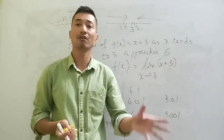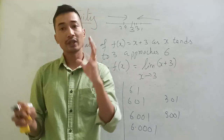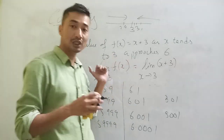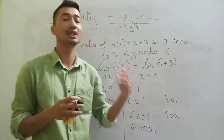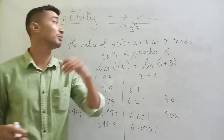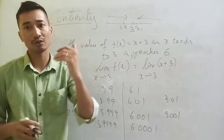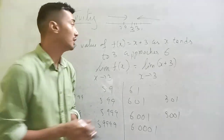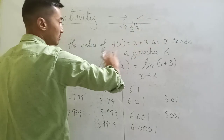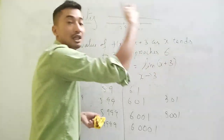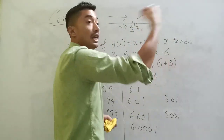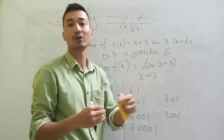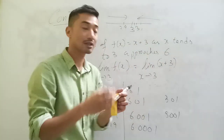I'm going to bring out a new video on limits in detail for Class 11 students as well. For now, I expect you have roughly studied limits already. Don't worry, I'll bring a separate detailed video on limits. The limiting value of f(x) as x tends to 3 approaches 6 — the function approaches 6 but it's the limit that tells you that, not just substitution. That's the concept.